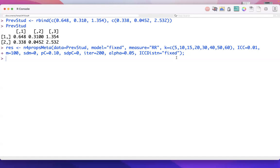So, this function, in this demonstration, we're using a fixed value of the ICC of 0.01. But the N4PROPSMETA function actually allows a lot of different options. We have the fixed one.